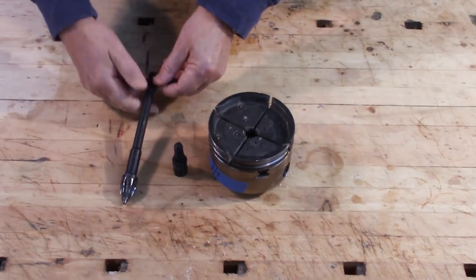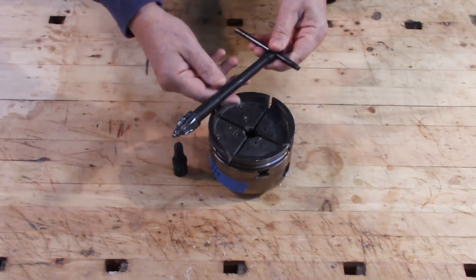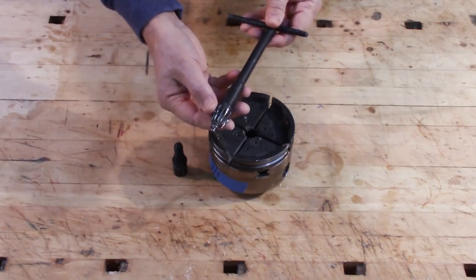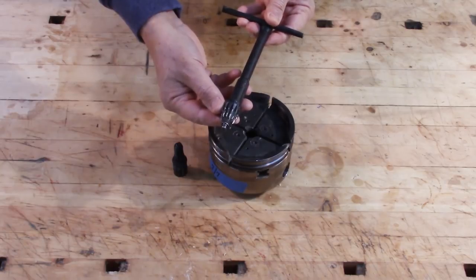So to do a larger piece of work, like a large bowl, larger chuck and larger jaws are useful. It will also come with some type of tightening device.